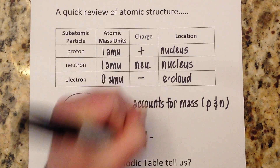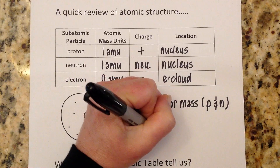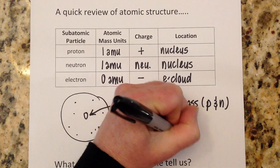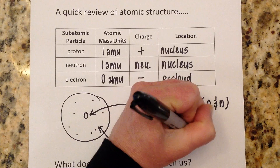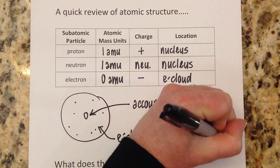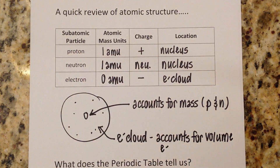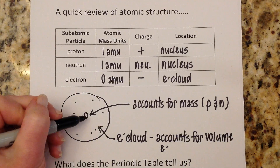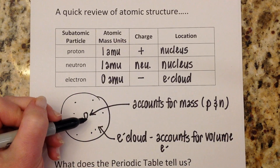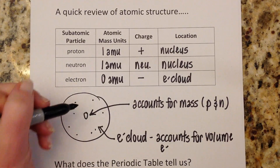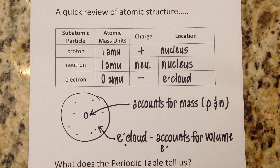The electron cloud accounts for most of the volume of the atom, and this is where our electrons live. To put it simply, think about the atom as fluffy — like a fluffy cotton ball with a little bitty lead BB in the middle. That BB would be your nucleus: heavy for its size, very dense, very compact. Then you've got this fluffy area around the outside — lots of empty space — and that is your electron cloud. That little bit of background will help you understand the math as we go through it today, and the math is really easy.